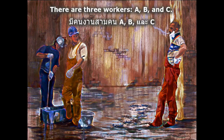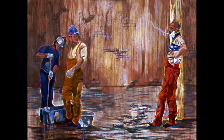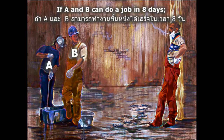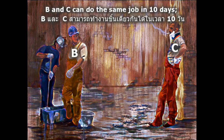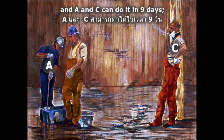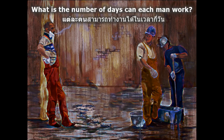There are three workers, A, B, and C. If A and B can do a job in eight days, B and C can do the same job in ten days, and A and C can do it in nine days. What is the number of days can each man work?